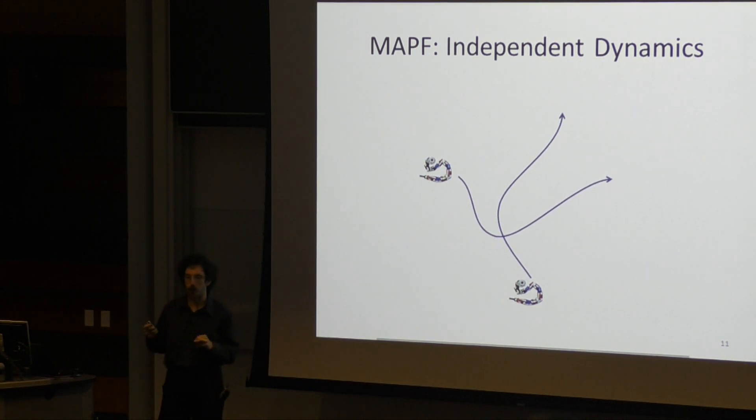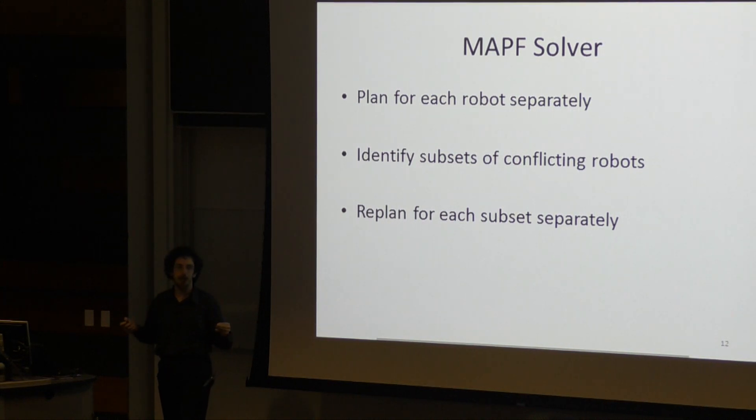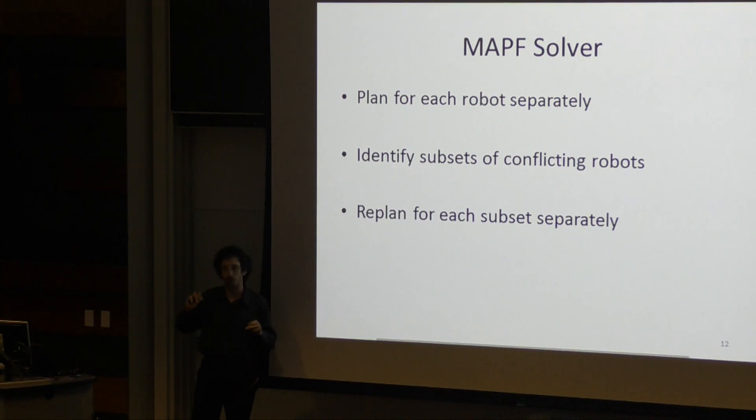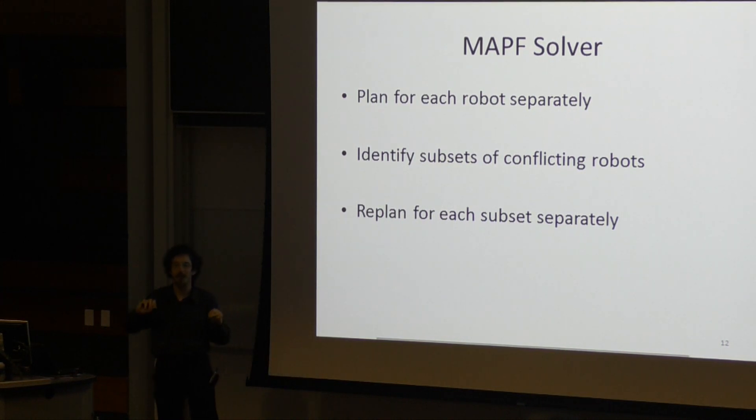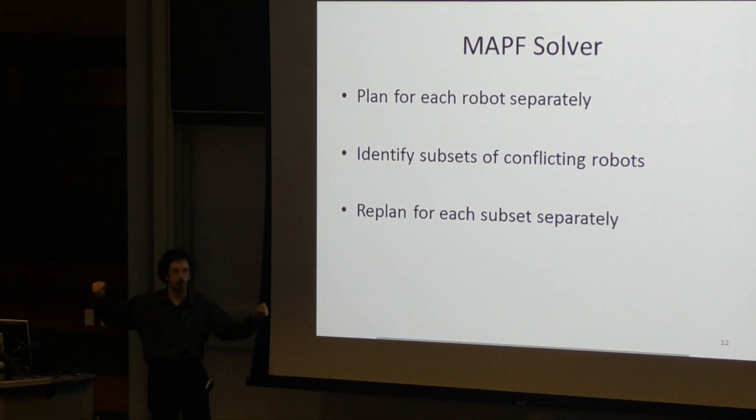Which allows us to focus our search and divide the subproblem, which means that just about any efficient, at least search-based MAPF solver will fundamentally look like planning for each robot separately, identifying disjoint subsets of robots that conflict with each other.